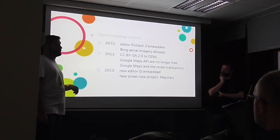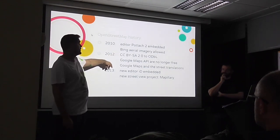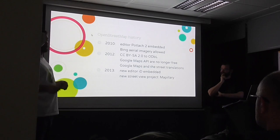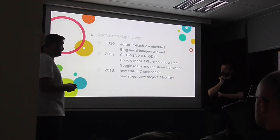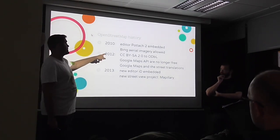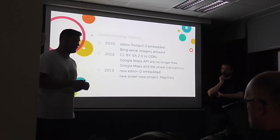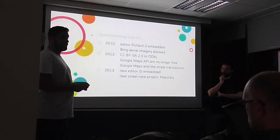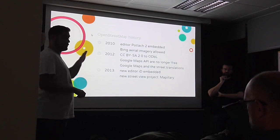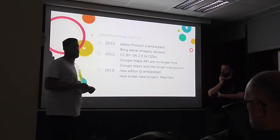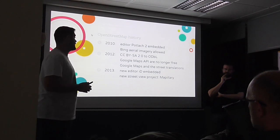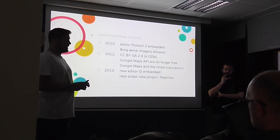In 2012, OpenStreetMap changed from a ShareAlike to an Open Database License, to improve and adapt the data to its goal of being free to share and adapt for everyone. Also in 2012, Google Maps API was no longer free for some projects, and Google Maps made a fake or wrong street translation in Catalonia.